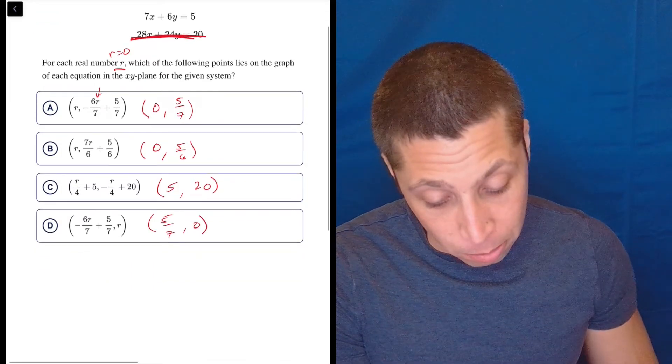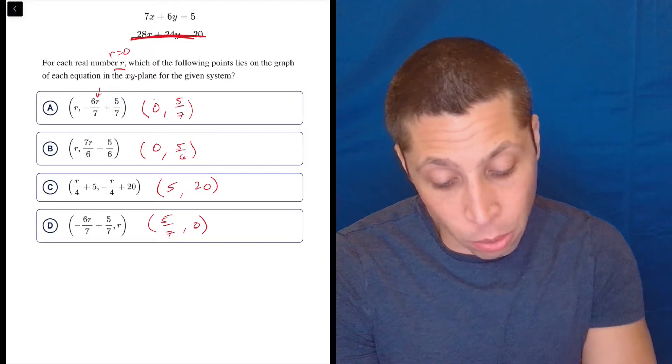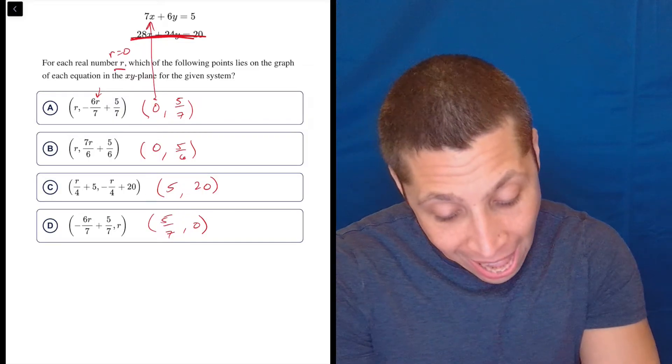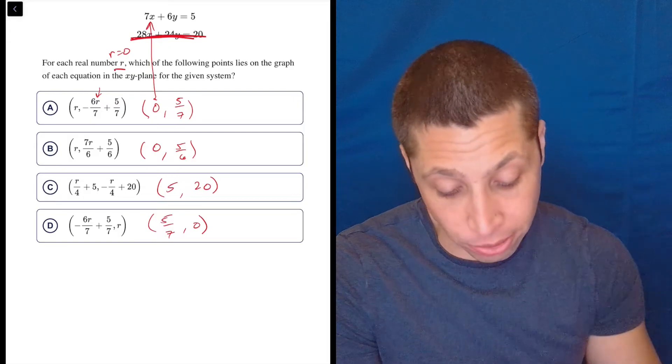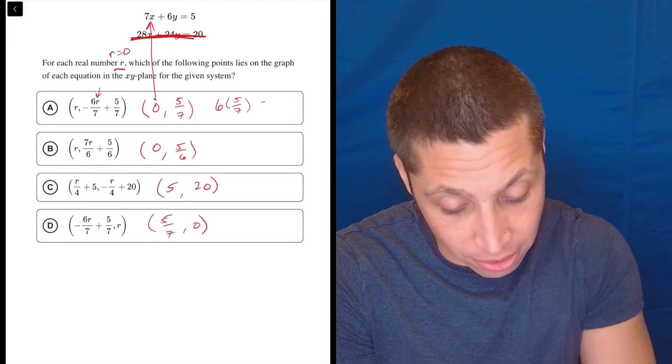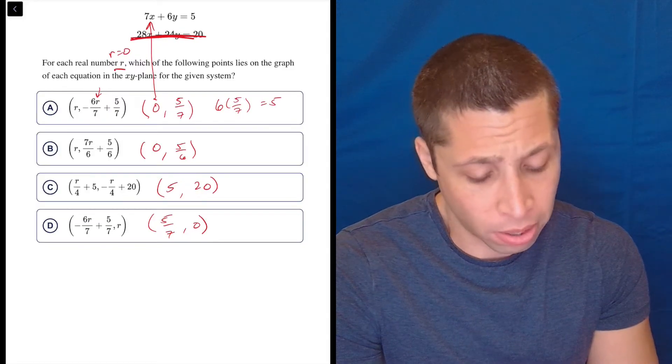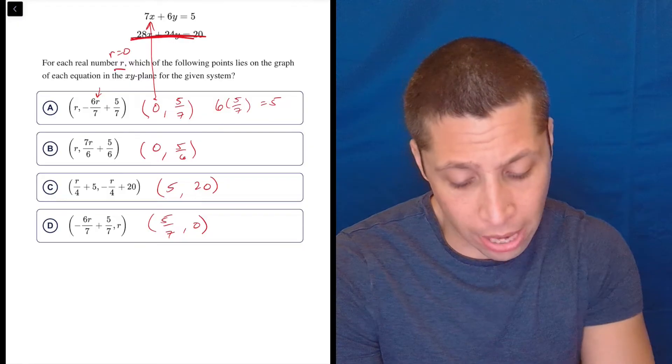So just plug it in. Let's just see what happens. Plug these points into each one. So if I do A, that 0 is now going to go in for the X. So talking about 0 knocking things out, now it's going to knock that out. So I'm going to do 6 times 5/7 equals 5. Well, even without dealing with the calculator, I know that's not true. I know how fractions work. That's not going to work out.